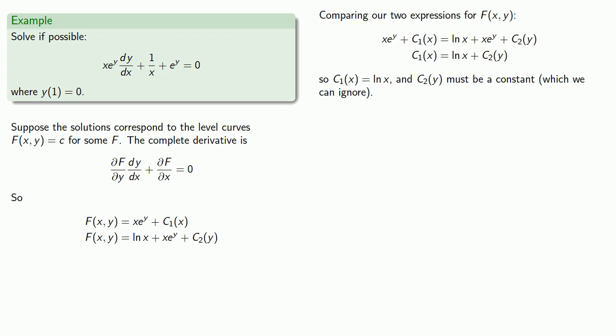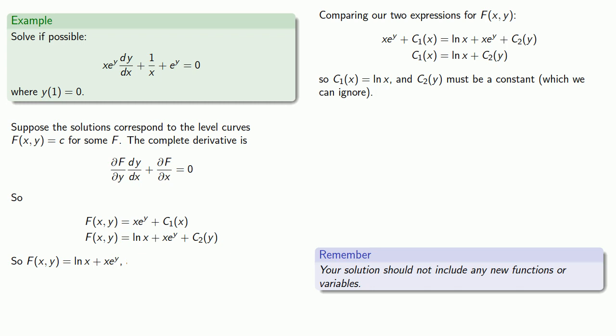So we could note that f of x, y is log x plus x e to the y. But remember, your solution should not include any new functions or variables. And so while we do have everything here by writing down this assumption that we're looking at the level curves f of x, y equals c, and then getting what f of x, y is, it's better to make that explicit. Our function log x plus x e to the y is equal to c.